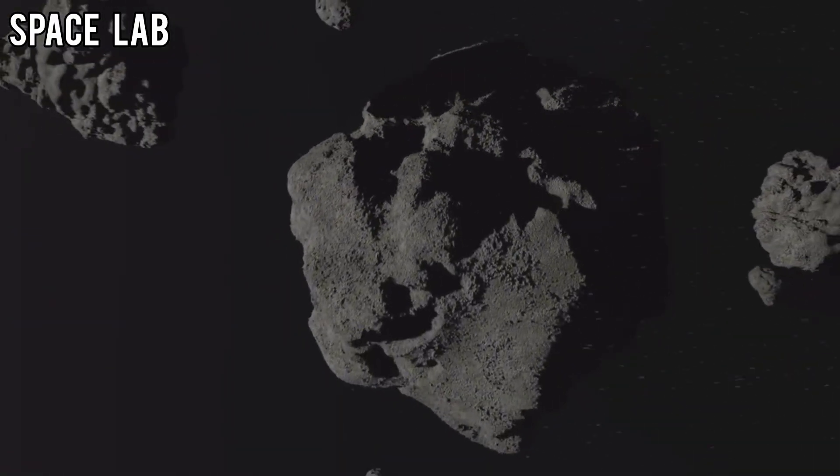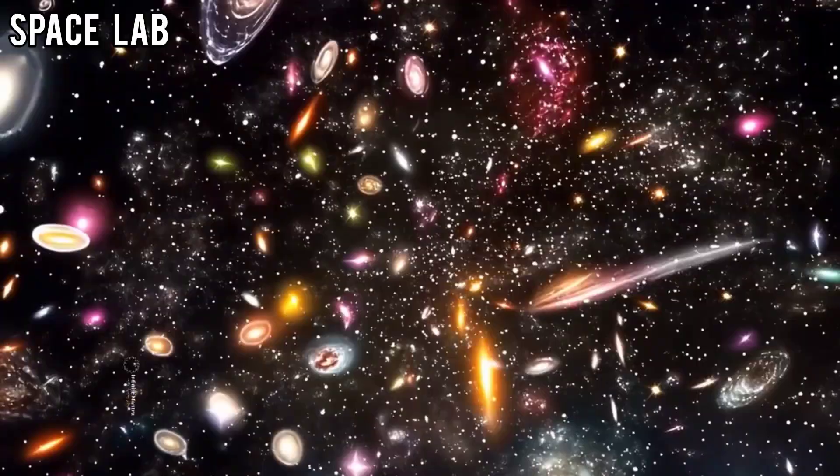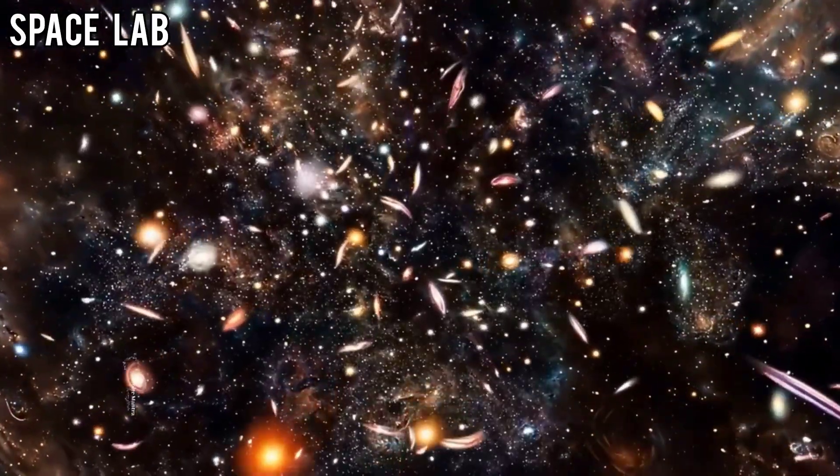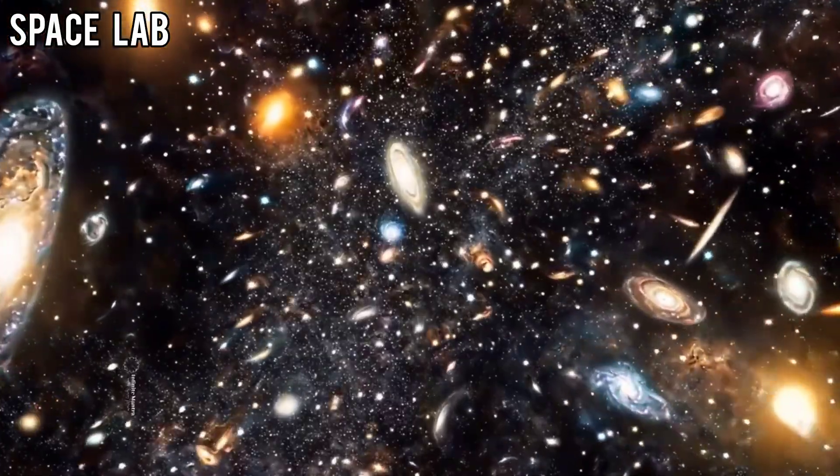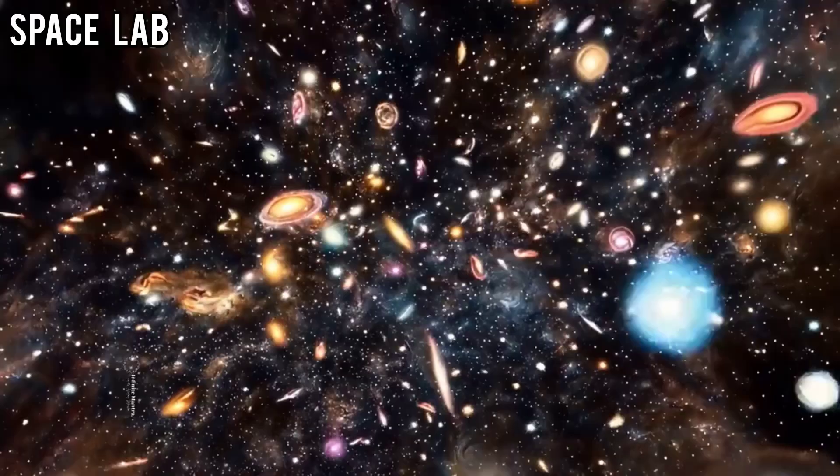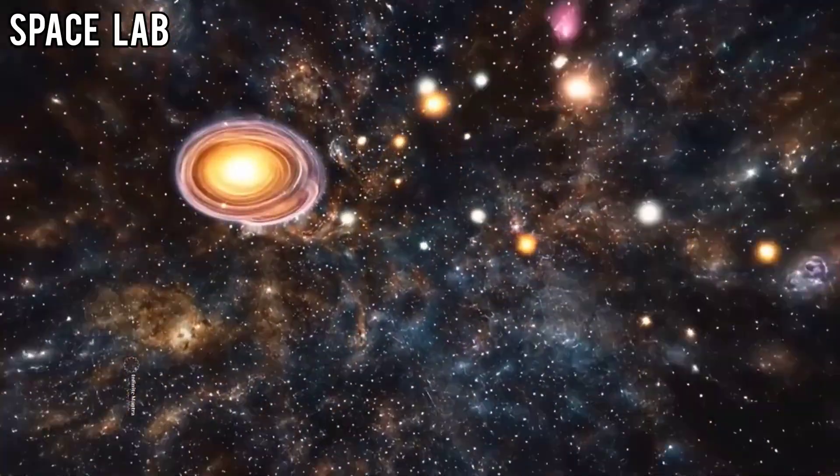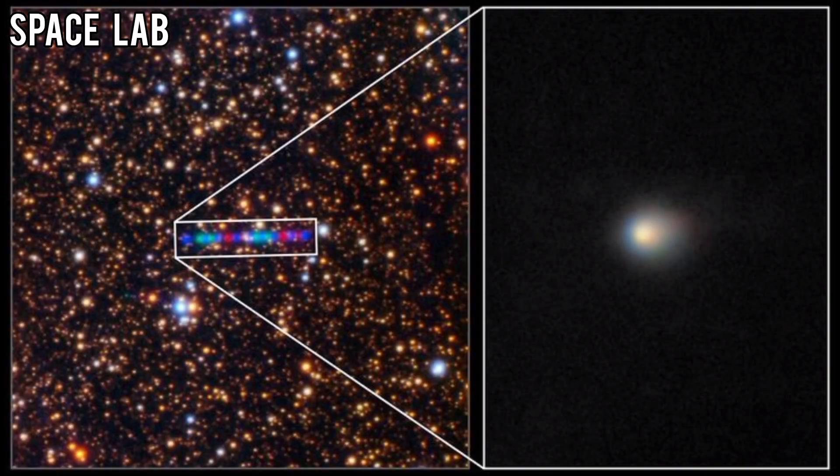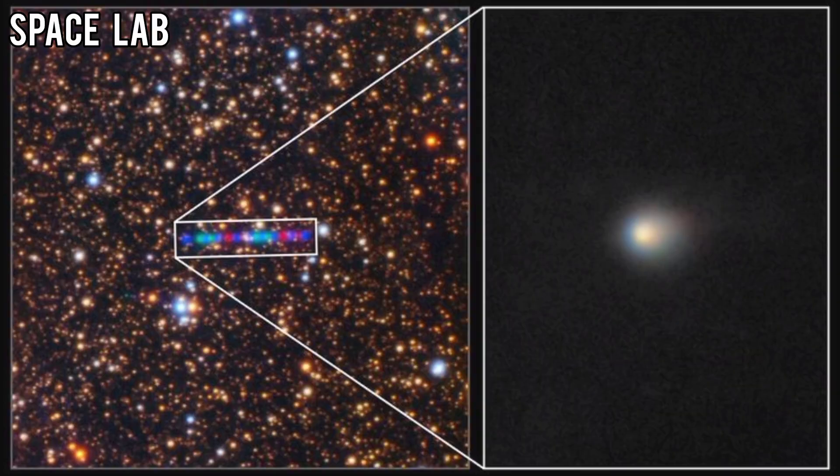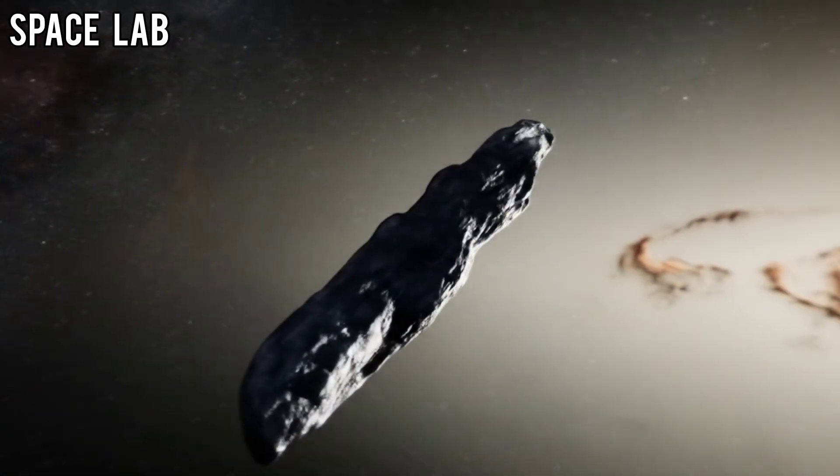At first, astronomers scrambled to dismiss the results. Maybe it was a glitch. Maybe cosmic rays struck Webb's sensors. But the more they checked, the more the data confirmed that 31-Atlas wasn't an asteroid. It was behaving like a machine.